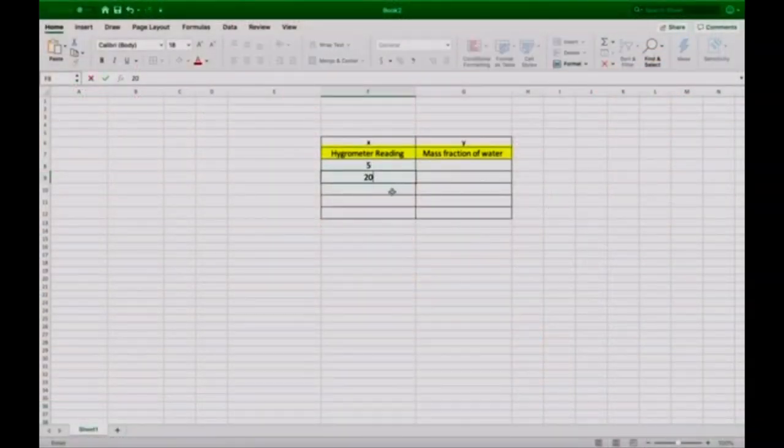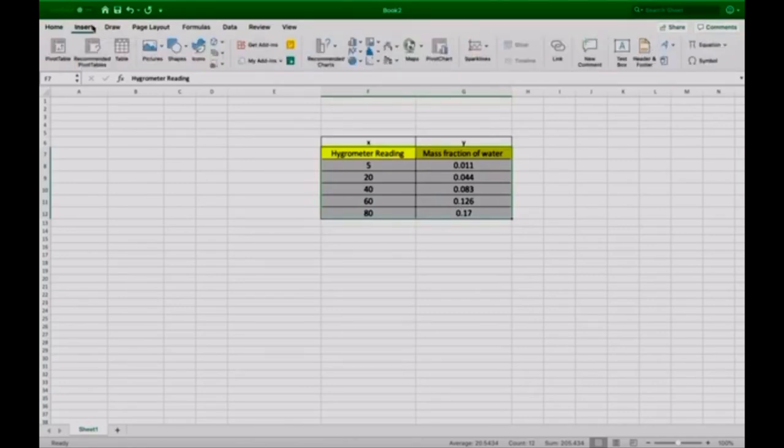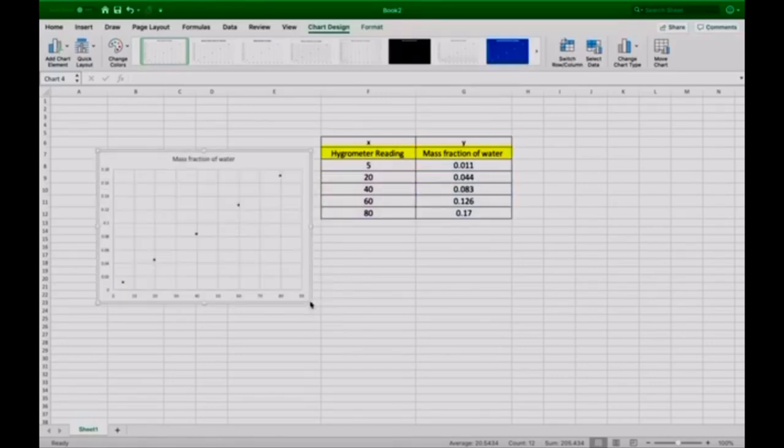The goal today is determining the mass fraction of water at r equals 43. In order to do that we're going to enter into Excel the values of the hygrometer reading as the x values and the mass fraction of water as the y values. We're going to select these values and enter them into a scatter plot to determine the trend line.